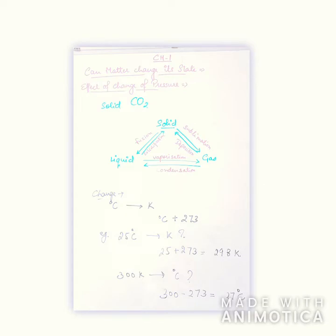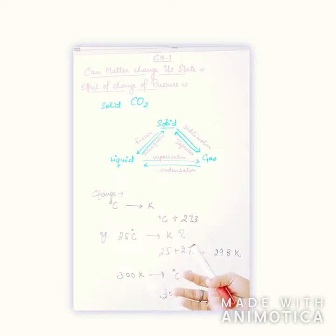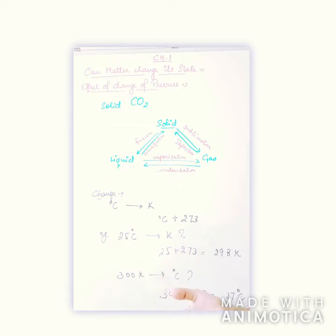There are some factors which affect the rate of evaporation. The rate of evaporation increases if we increase the surface area. For example, when putting clothes out to dry, we spread them out — by increasing the surface area, they dry faster. The rate of evaporation also increases if we increase the temperature, because more particles get enough kinetic energy to go into the vapor state.